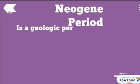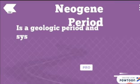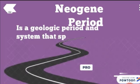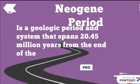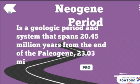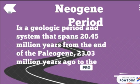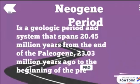The Neogene Period is a geologic period and system that spans 20.45 million years from the end of the Paleogene Period, from 23.03 million years ago to the beginning of the present Quaternary Period.